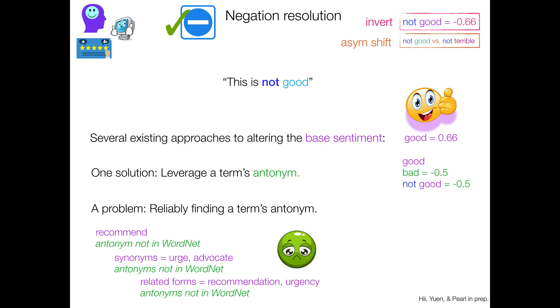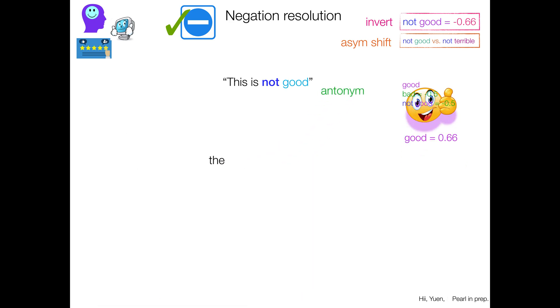And you're like, maybe related forms like recommendation or urgency, and these antonyms are not in WordNet. So you can run into this problem kind of a lot. So maybe it's hard to find a term's antonym. But the idea that nuances of meaning may matter seem right.